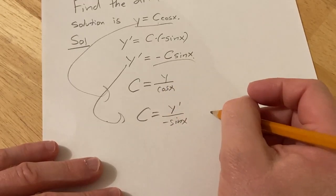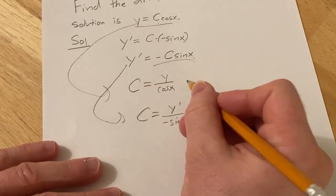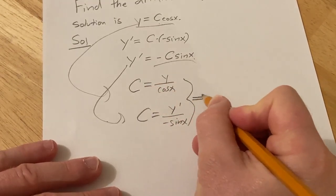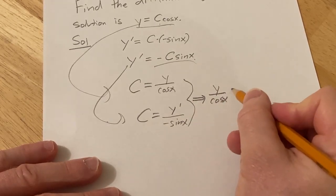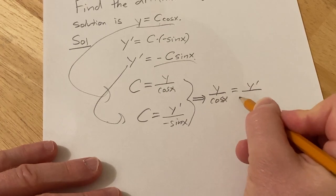So now we have C equal to both of these things so both of these things must be equal. Therefore we have y over cosine x equals y prime over negative sine x.